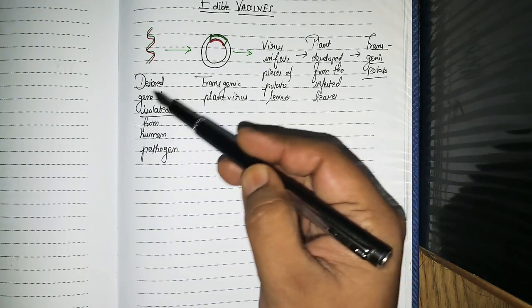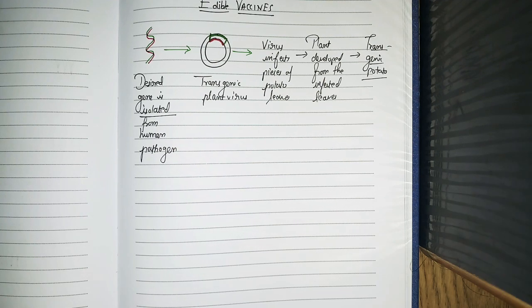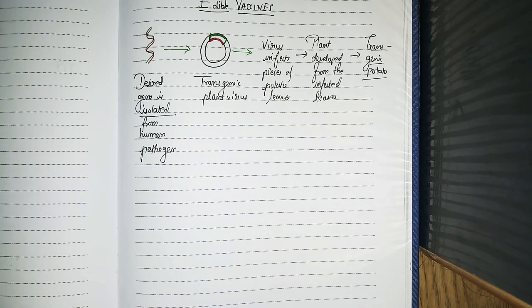We get the desired gene from the human pathogen. For example, if you are making edible vaccine against vibrio cholerae, we take out that gene which is responsible for cholerae.